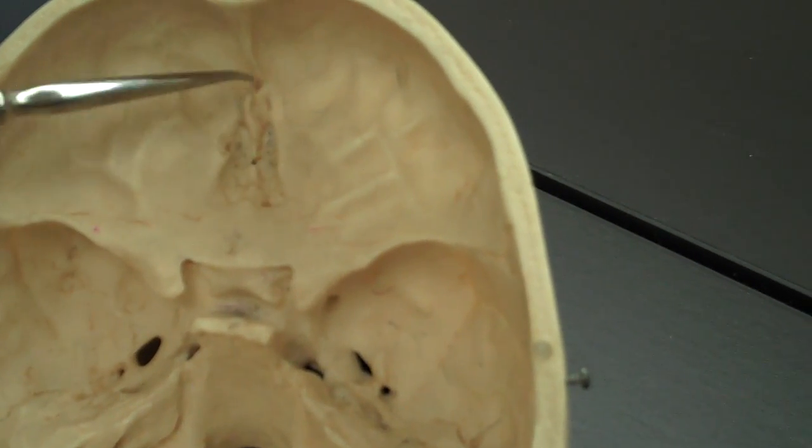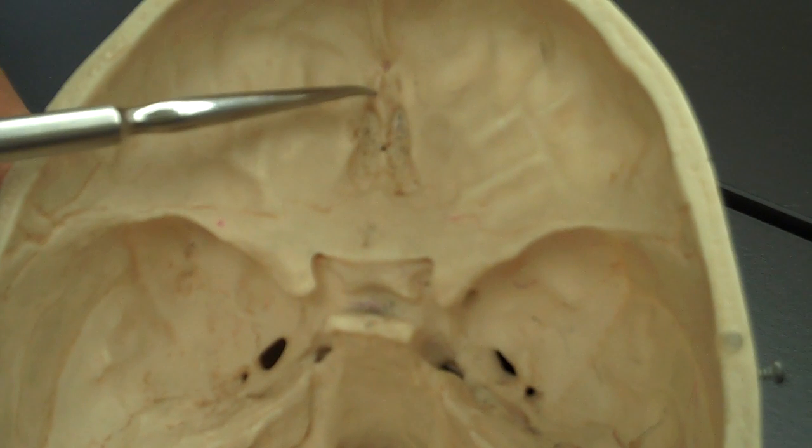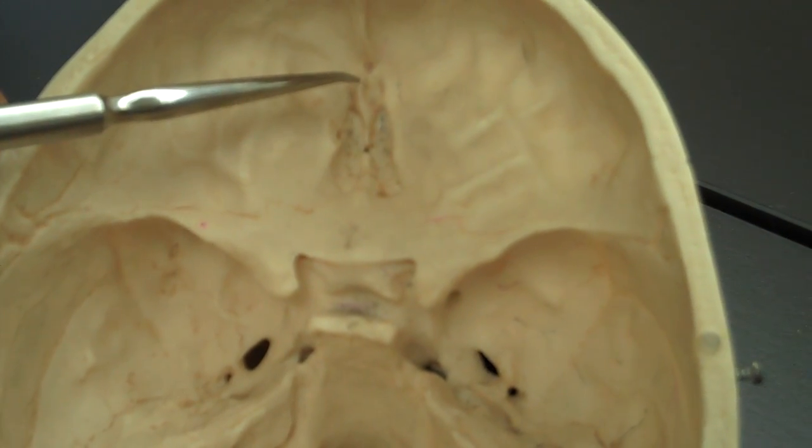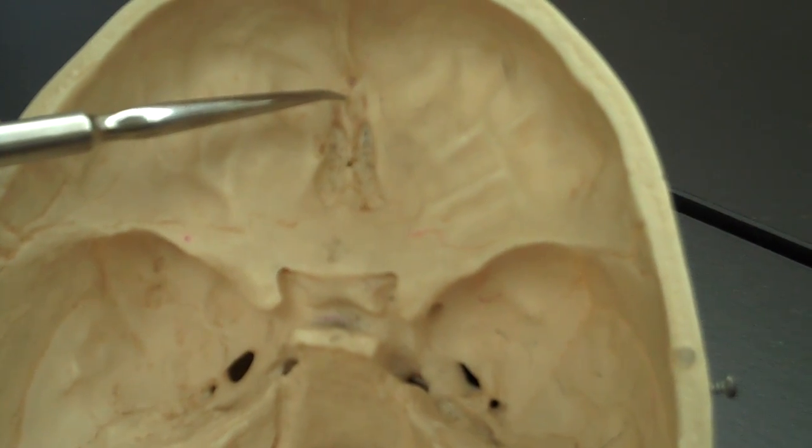Interesting features of the ethmoid bone that you can see here. We've got this ridge, this pointed section right here. That would be called the crista galli, and it's a point of attachment for the dura mater or the outer lining of the brain to help keep that secure.